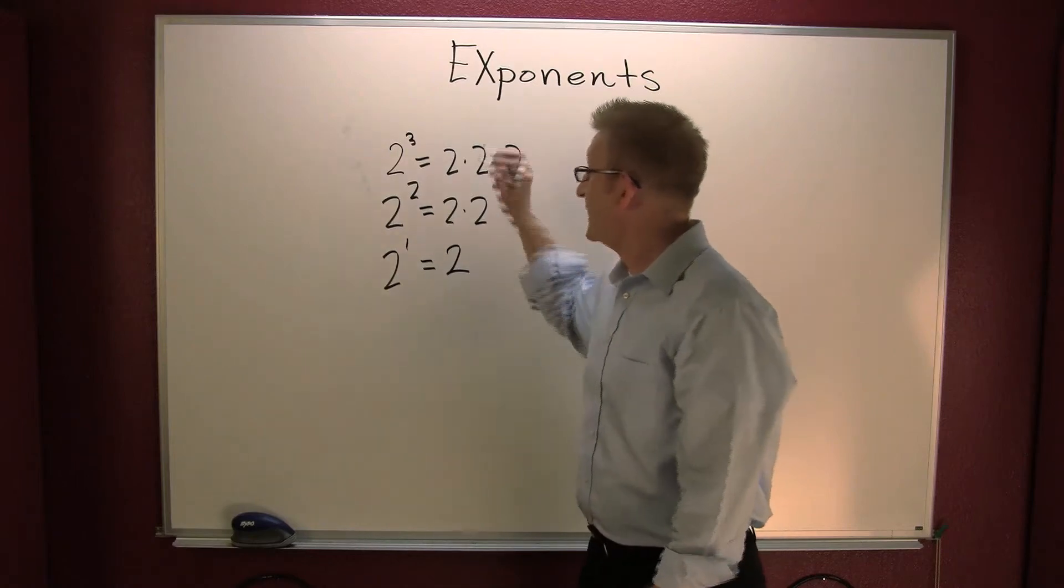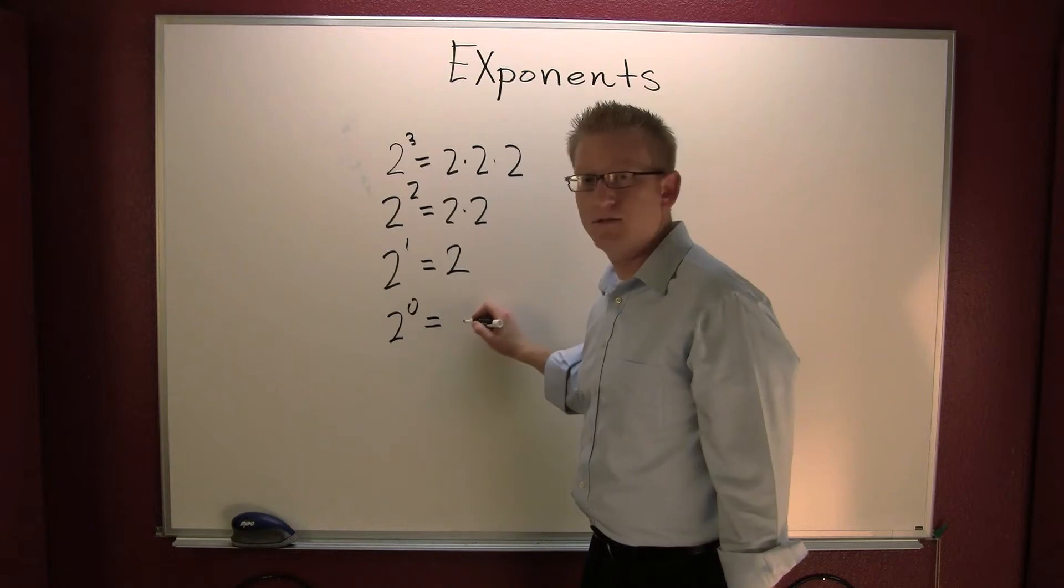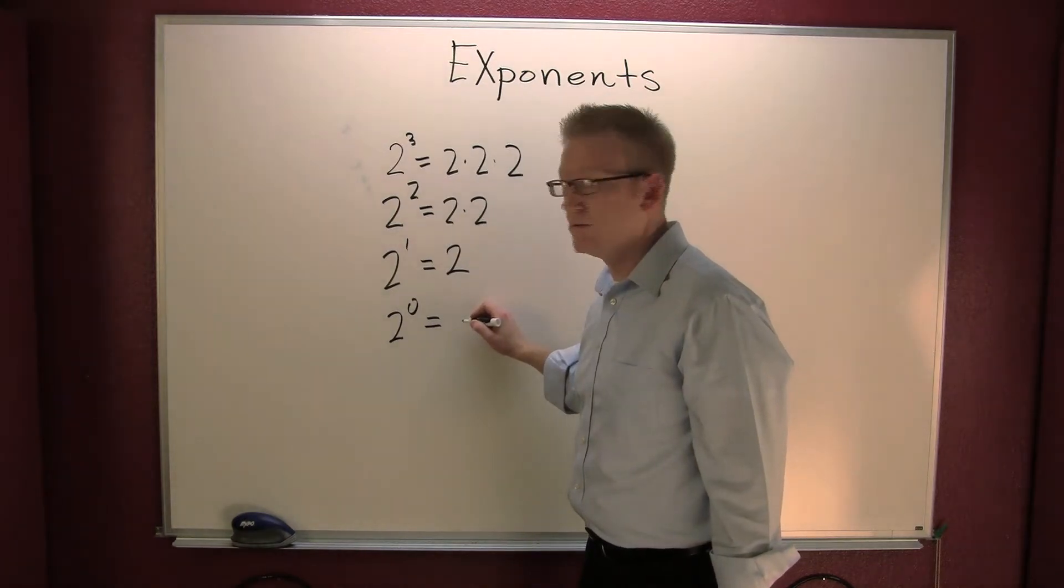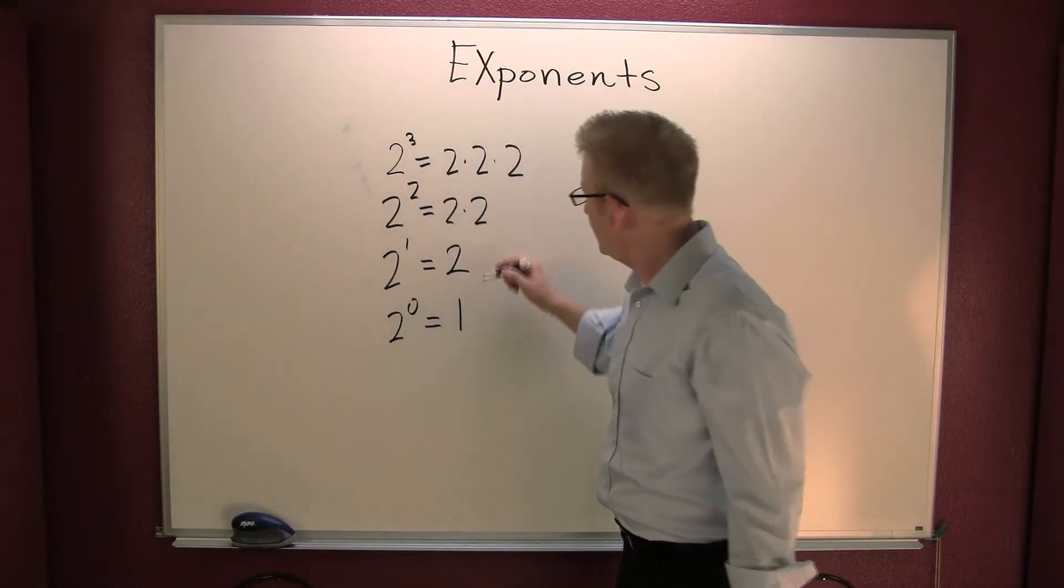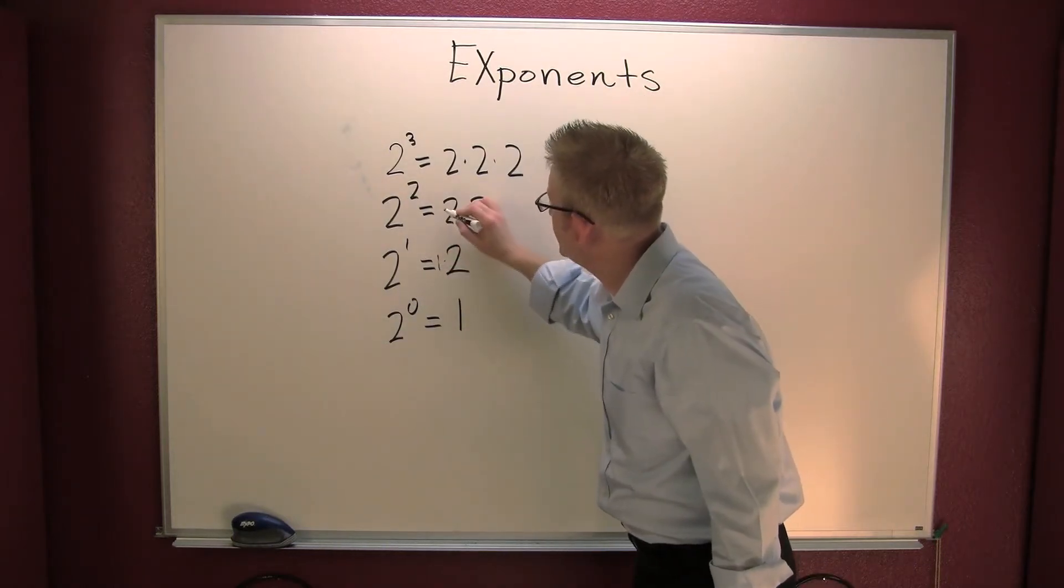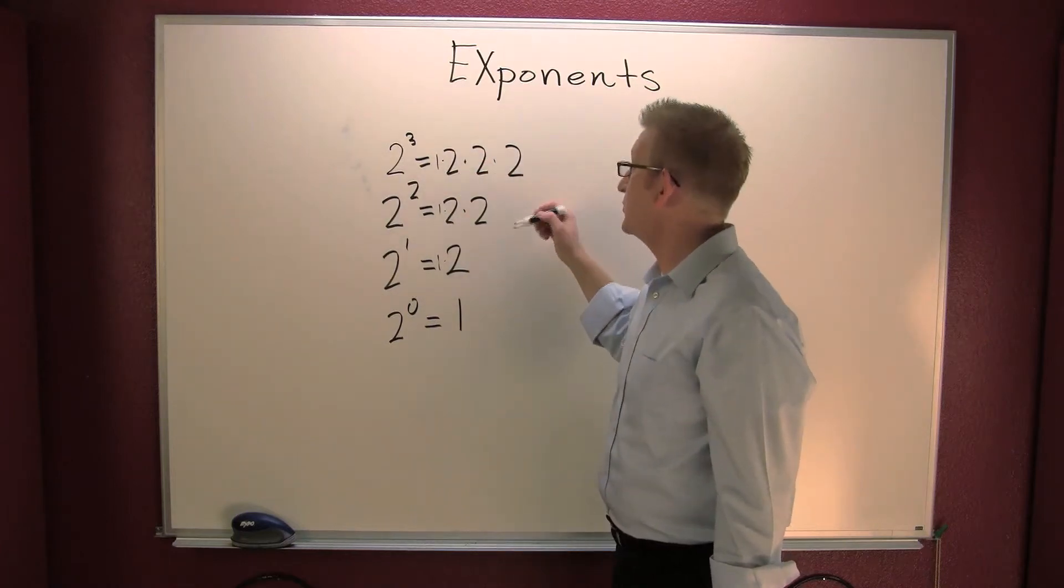And two to the zero, what's that? It's a one. Good stuff. Good stuff. You could see this is one times that, although I don't like to show it that way. And one times that. Okay.